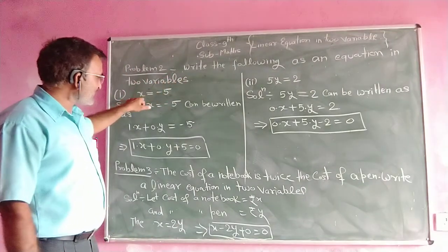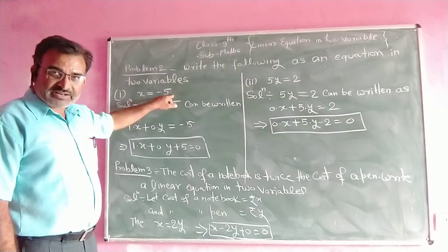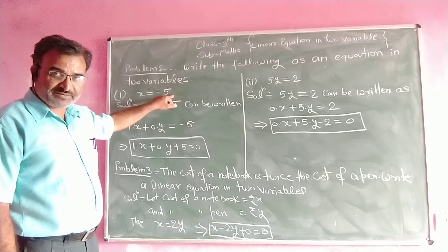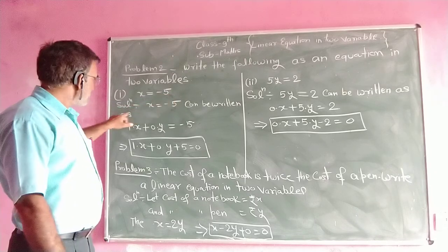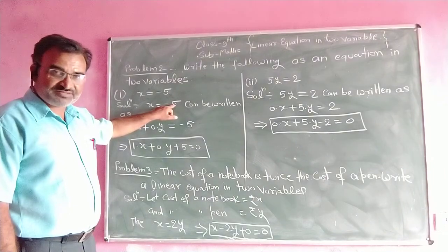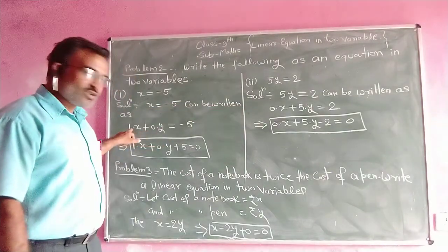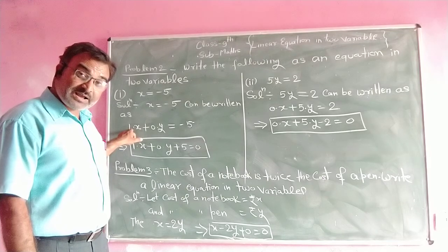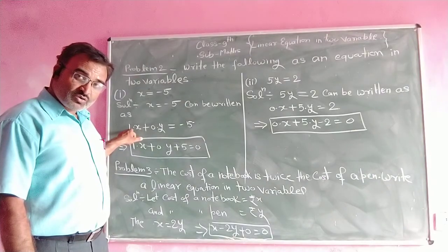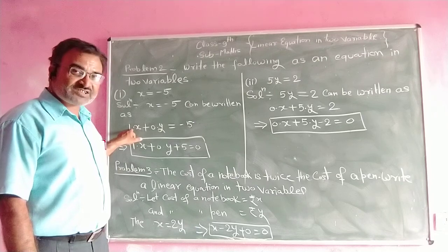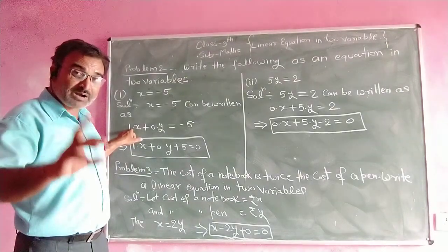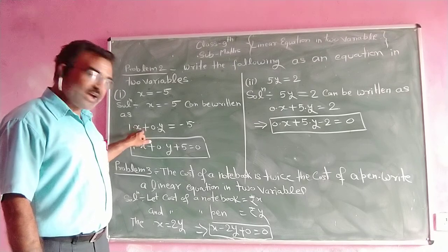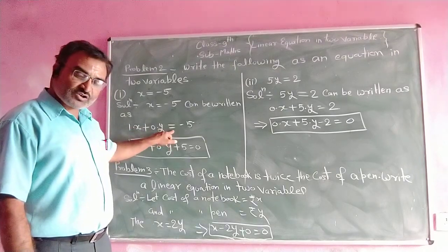The first equation is x equal to minus 5. We have to represent this equation in the standard form of a linear equation in two variables. The solution: x = -5 can be written as 1 times x plus 0 times y is equal to minus 5.